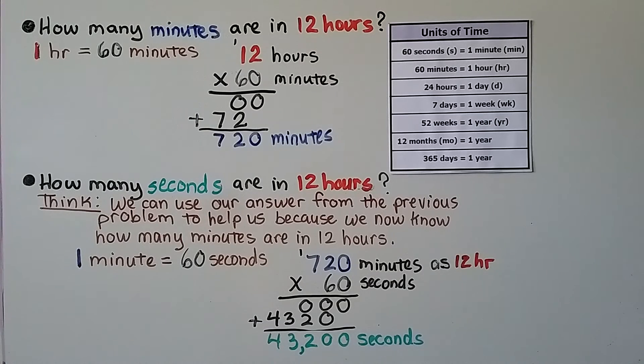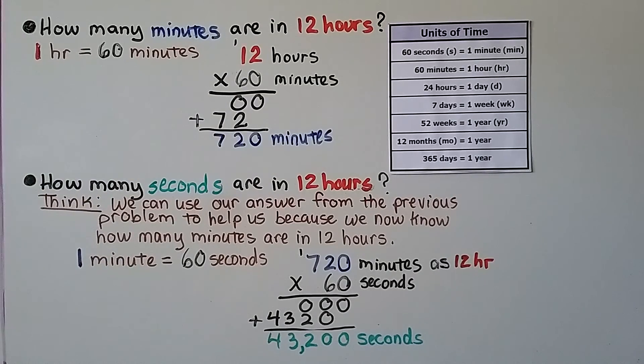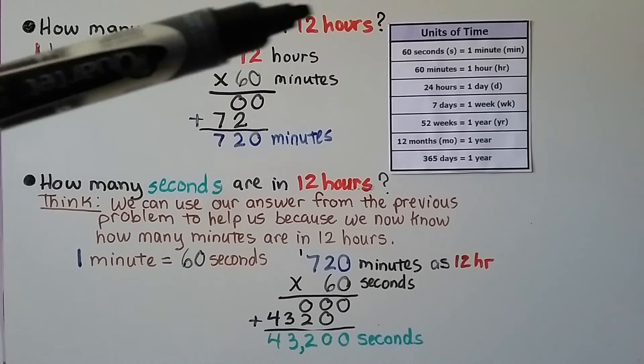How many minutes are in 12 hours? Well, there's 60 minutes in one hour and we've got 12 of them. So we can multiply 12 hours times 60 minutes. We find that it's 720 minutes in 12 hours.